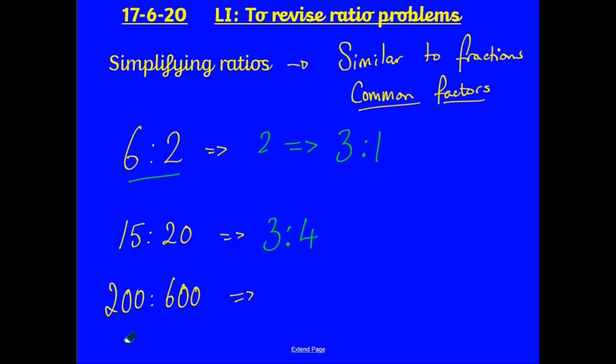And the ratio of 200 to 600, well, you might be able to do this immediately, or you could break it down into steps. First of all, I know straight away that a common factor of this is 100. So, I'm going to divide them both by 100. So, 200 divided by 100 is 2. 600 divided by 100 is 6. Well then, it goes further again. They still have common factors. So, I can divide them both by 2 again, which gives me 1 to 3. So, 200 to 600, simplified ratio is 1 to 3.